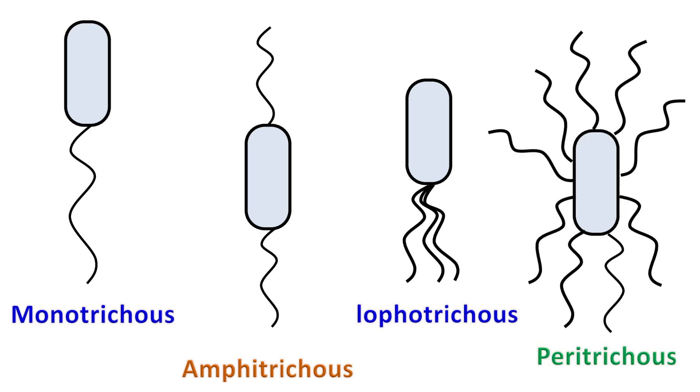Peritrichous means the cell is surrounded by many flagella. Thank you.